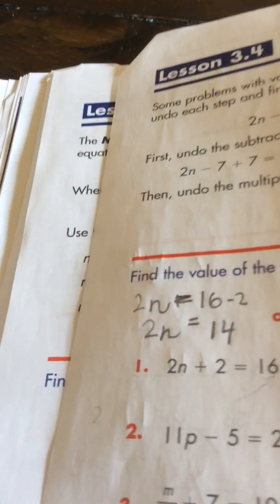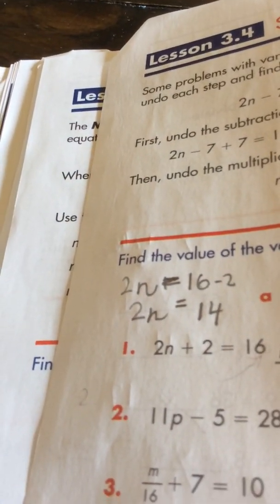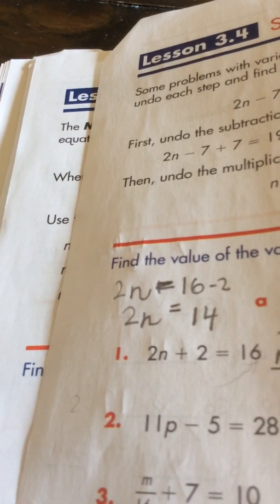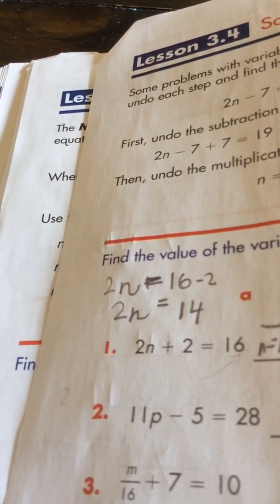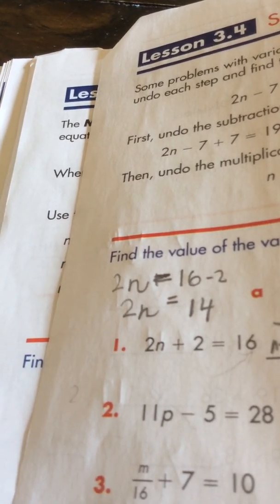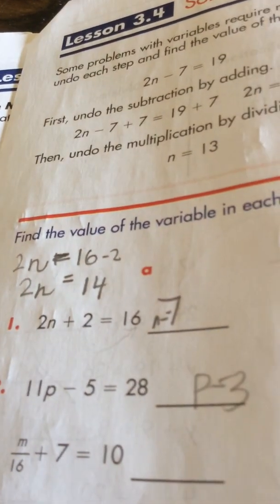So the next question is 11p minus 5 equals 28. So pause this video to see if you can do it. So the answer is 3.